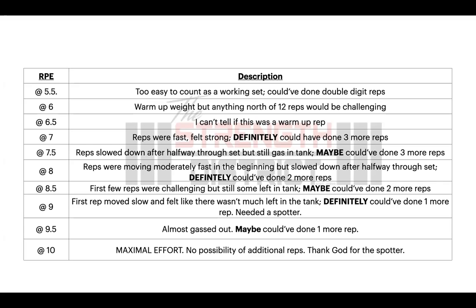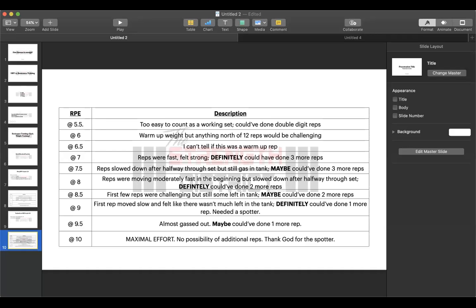Gauging RPE is easier with a one-rep max because you know whether you had two, three, or more reps left in the tank. At higher rep ranges it becomes harder to assess. This does not get perfected on your first attempt — by all means, ask your coach. Reassess how you felt, watch the video back, note whether you moved fast or slow after the fourth or fifth rep, and approach it with a critical mindset.